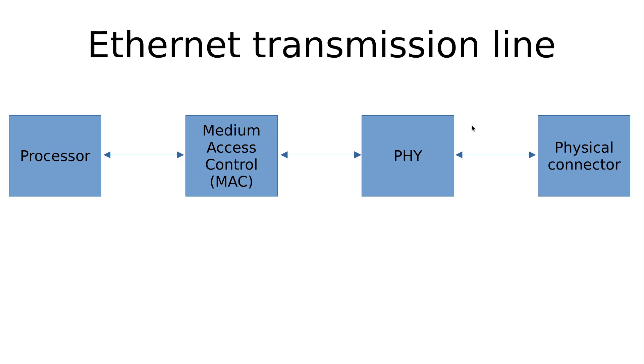And the PHY outputs analog signals which are going to a physical connector, for example an RJ45 Ethernet connector. But we will see more examples later here in the slides. So now let's take a look how these four components are connected together.